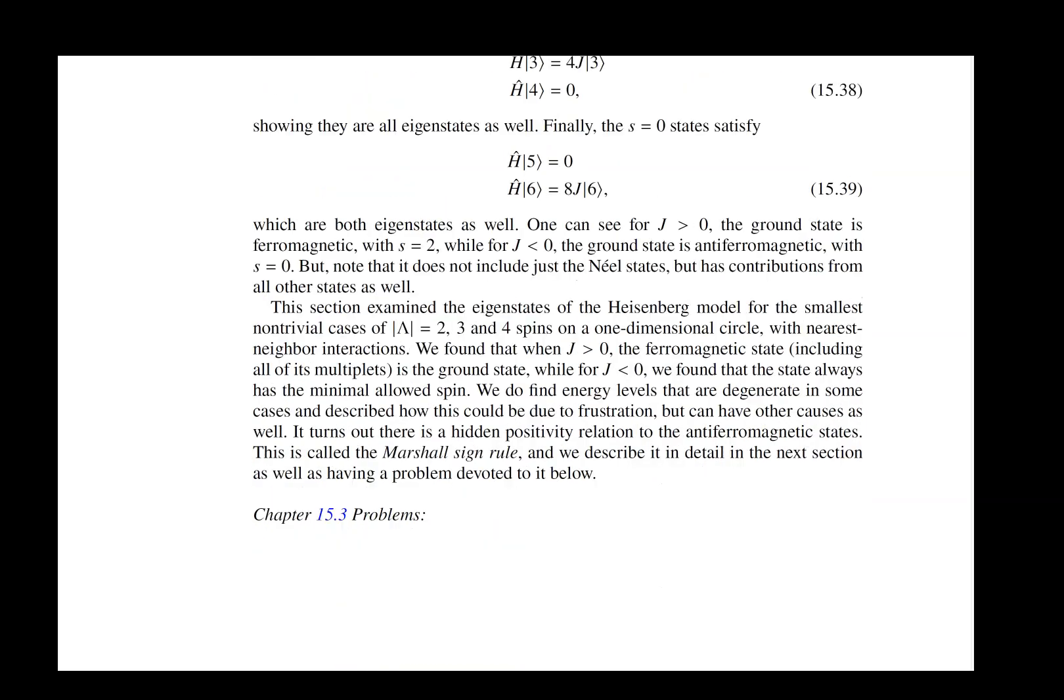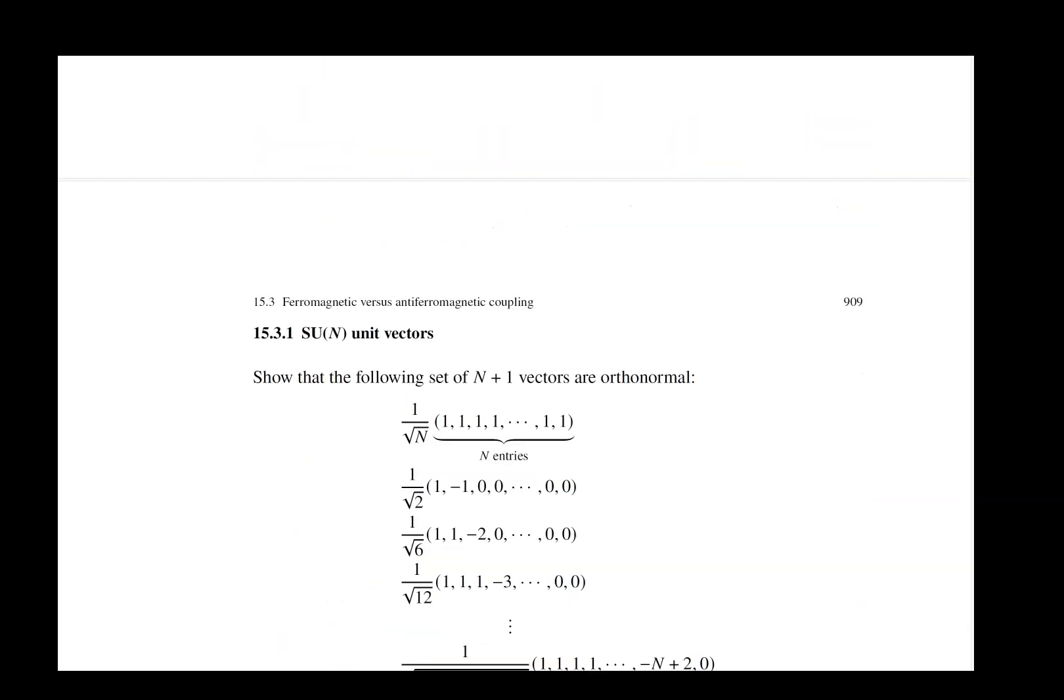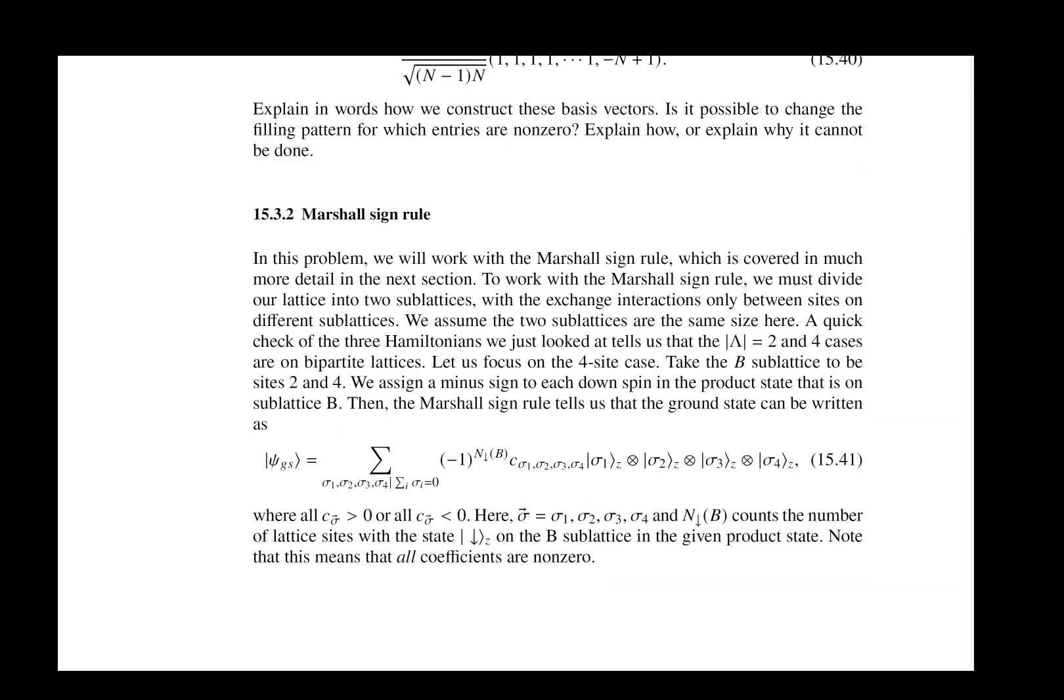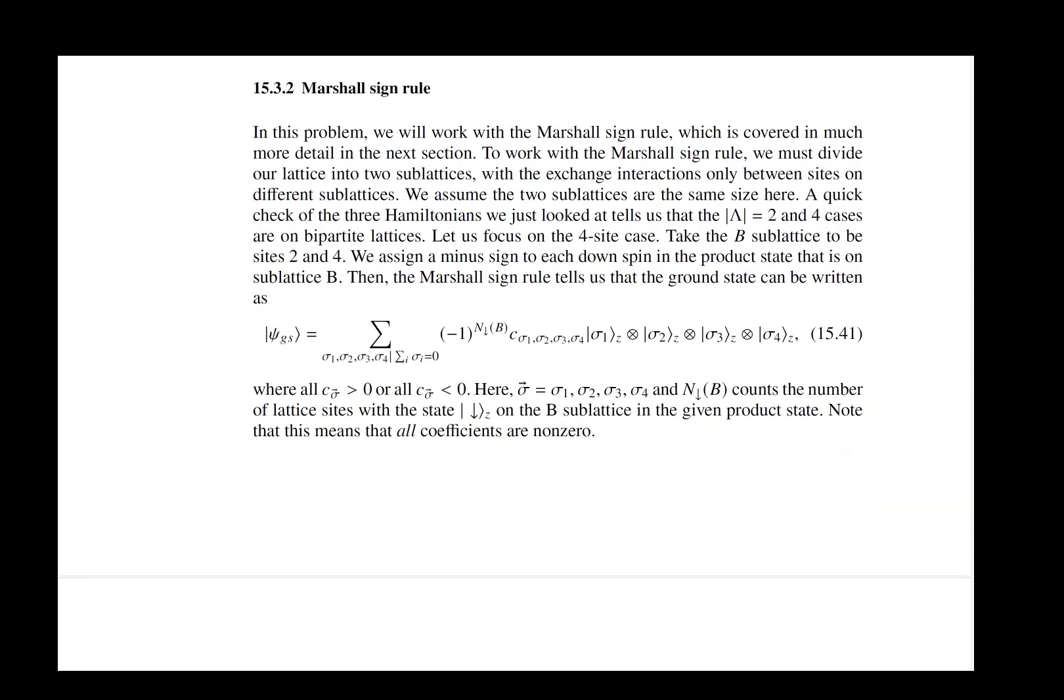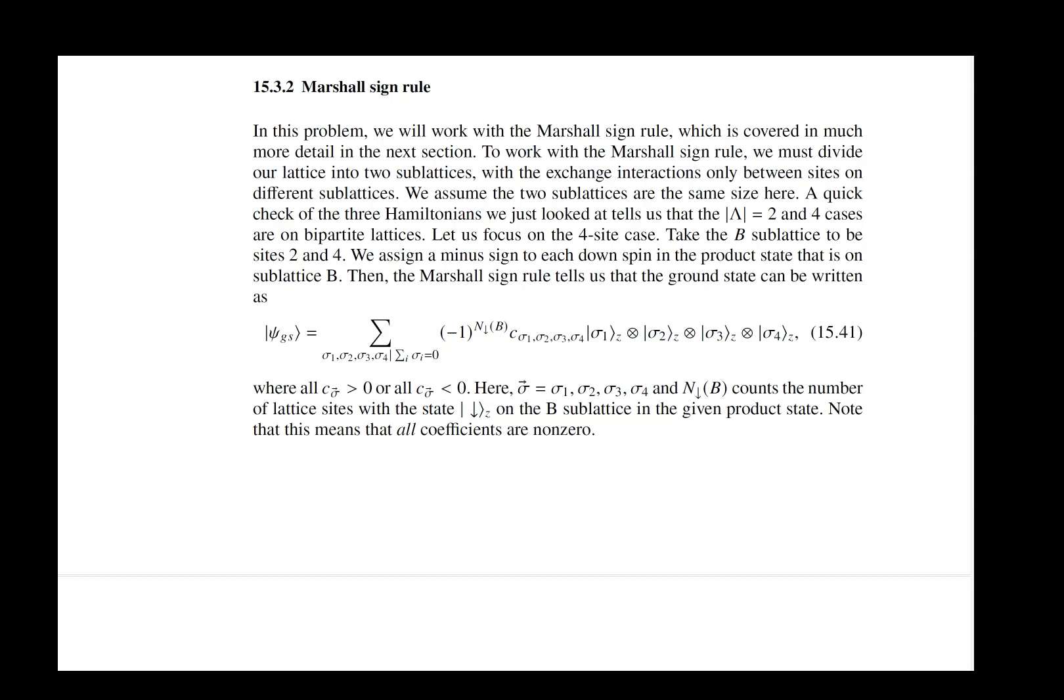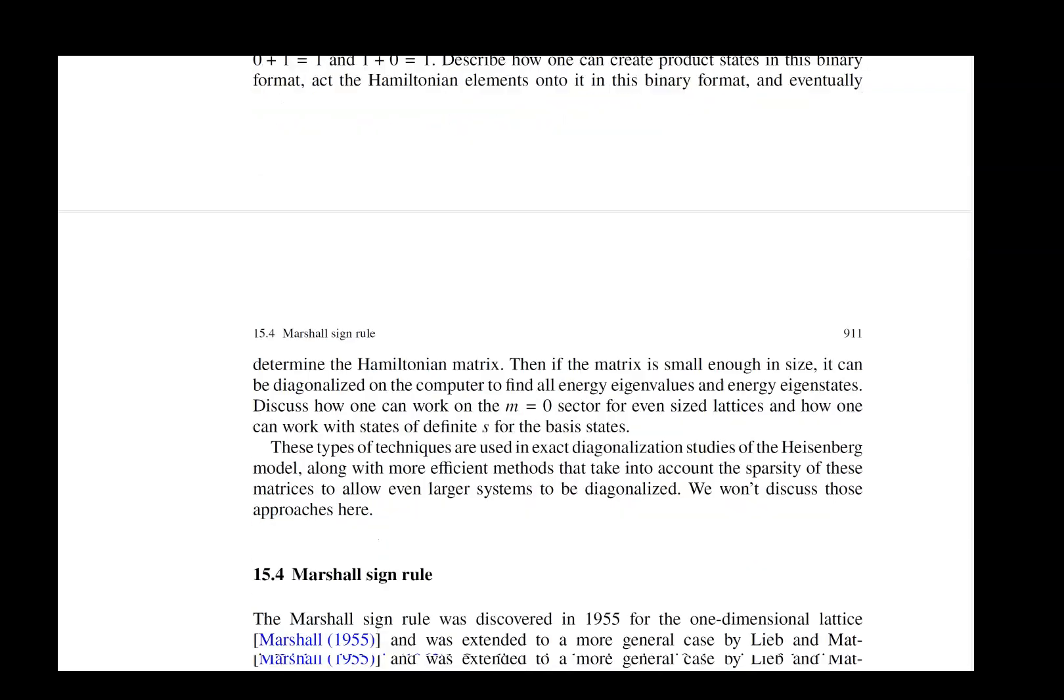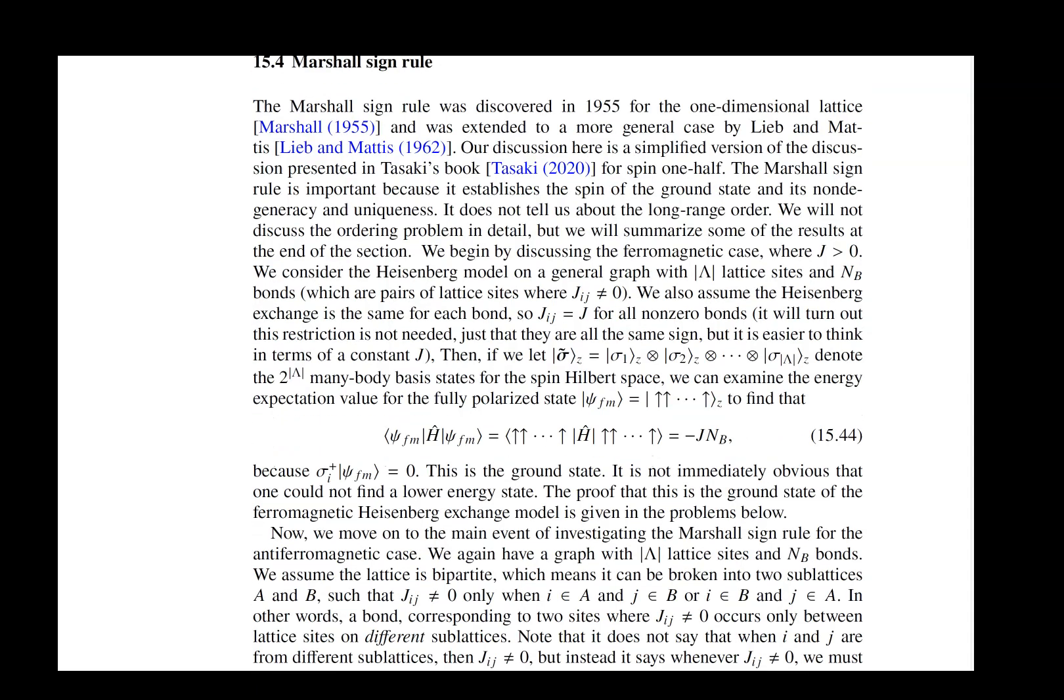Then in the next section, and one of the things that we do is we actually look at solutions on finite size clusters to help us understand the behavior a bit better as well. Then after we've looked at all of the different problems, we move on to the Marshall sign rule. The Marshall sign rule is something that is particularly important for the antiferromagnetic case of the Heisenberg exchange model.